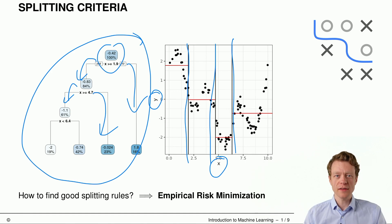And the answer is empirical risk minimization, which is great because we already know about this a little bit.